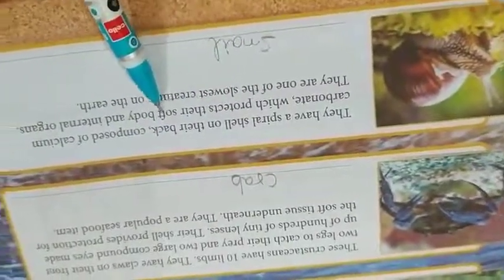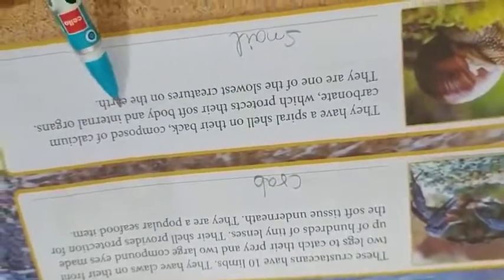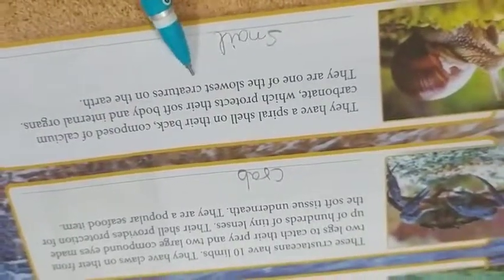They have a spiral shell on their back composed of calcium carbonate which protects the soft body and internal organs. They are one of the slowest creatures on earth. It is snail.